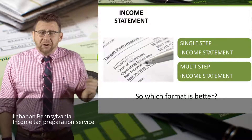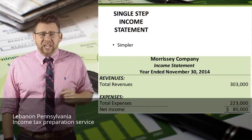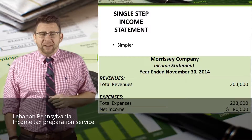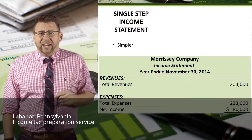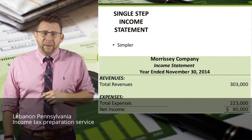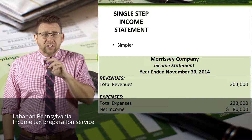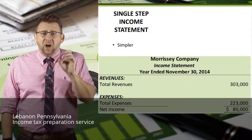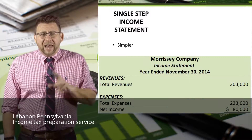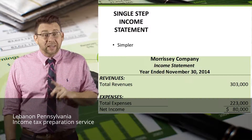So which format is better? It depends. The single-step is easier to read and understand. For service firms that don't have gross profit, and where there isn't much benefit from distinguishing between operating and non-operating activities, it's the simple way to express profitability. But there are drawbacks — in the example, this firm earned $80,000 of net income on $303,000 of revenue. The question is, how repeatable is that next year? Let's answer that by looking at the multi-step format.